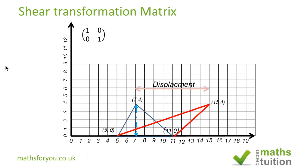The identity matrix is [1, 0; 0, 1]. The unit matrix on the x-axis is (1, 0) and the unit matrix on the y-axis is (0, 1). Because we are moving in the x-direction and our scale factor is 2, that changes our unit vector from (1, 0) to (2, 1).